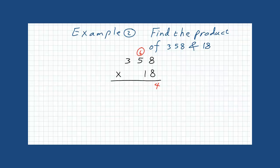40 plus 6 is 46. So, we will put 6 and we have 4 up here. 8 times 3 is 24. Plus 4, it is 28.